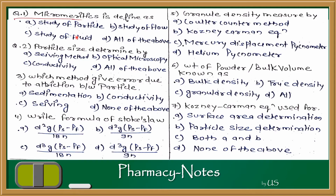Question 1: Micromartics is defined as? The Dalla scientists defined Micromartics as the particle science and technology. Options are: study of particle, study of flow, and all of the above. The answer is A — study of particle.